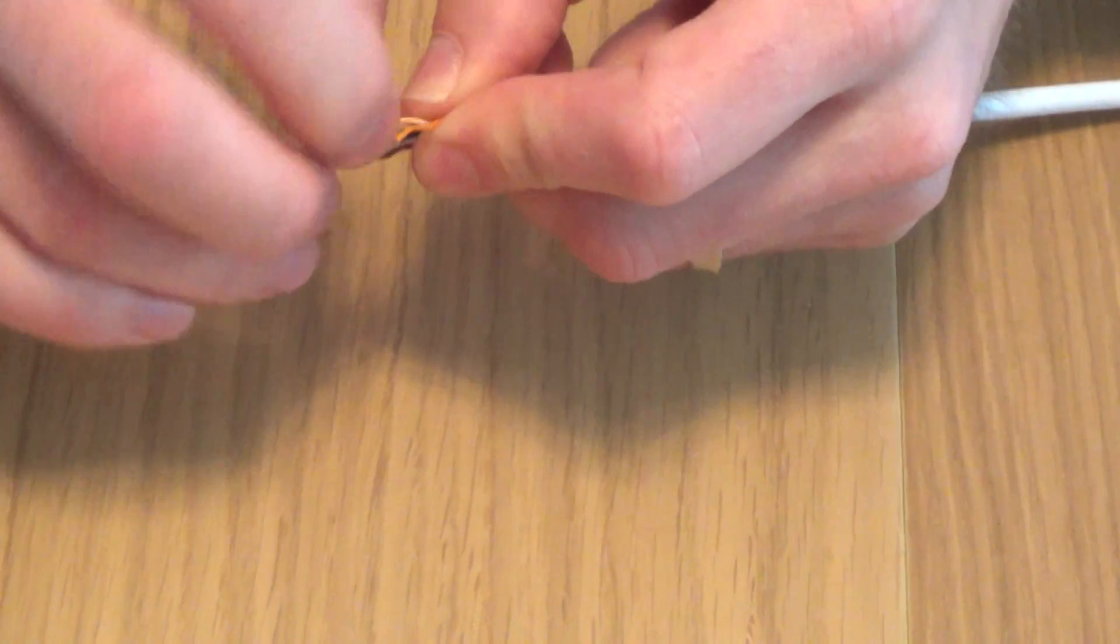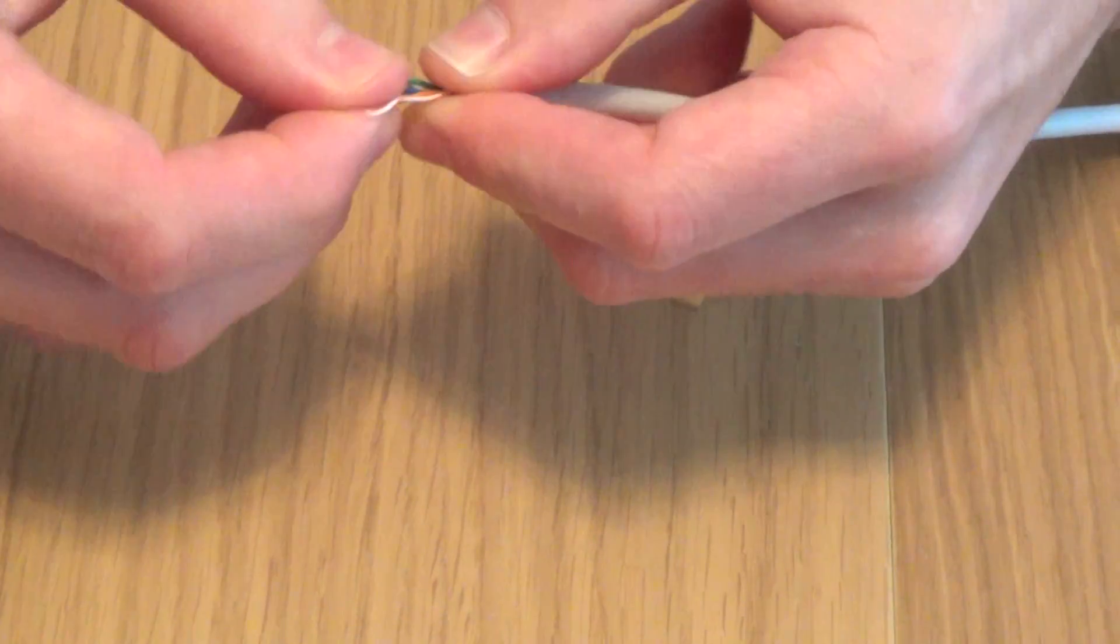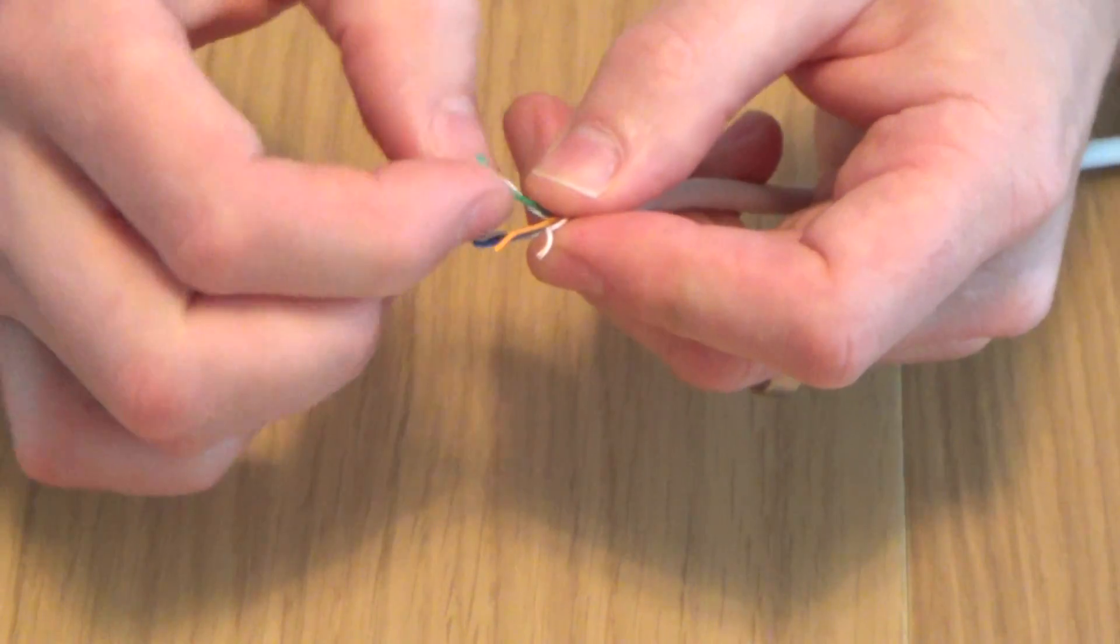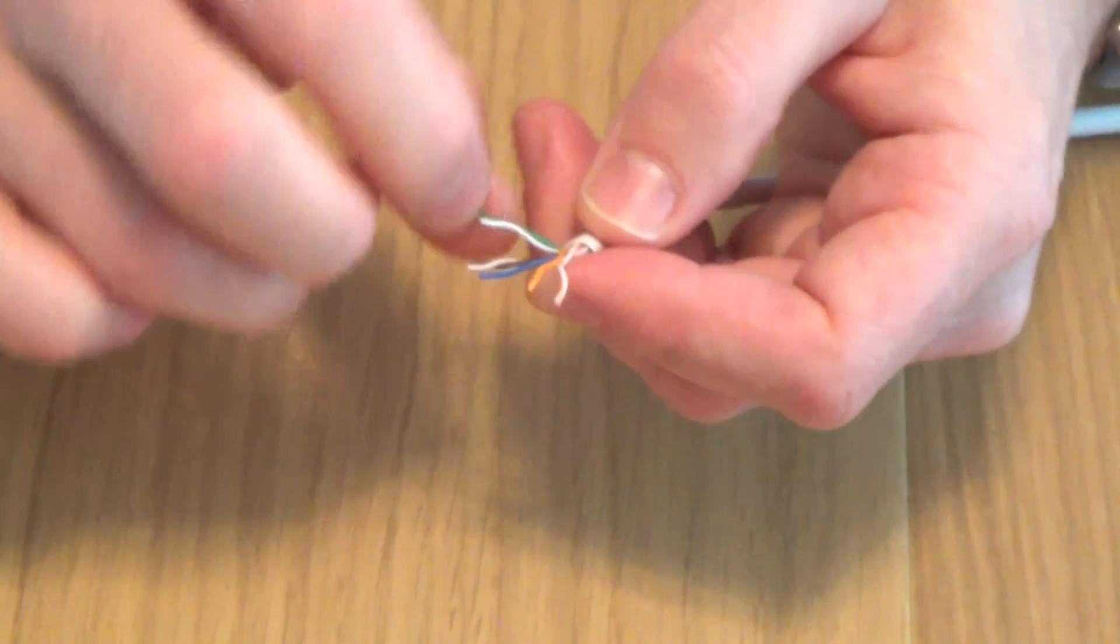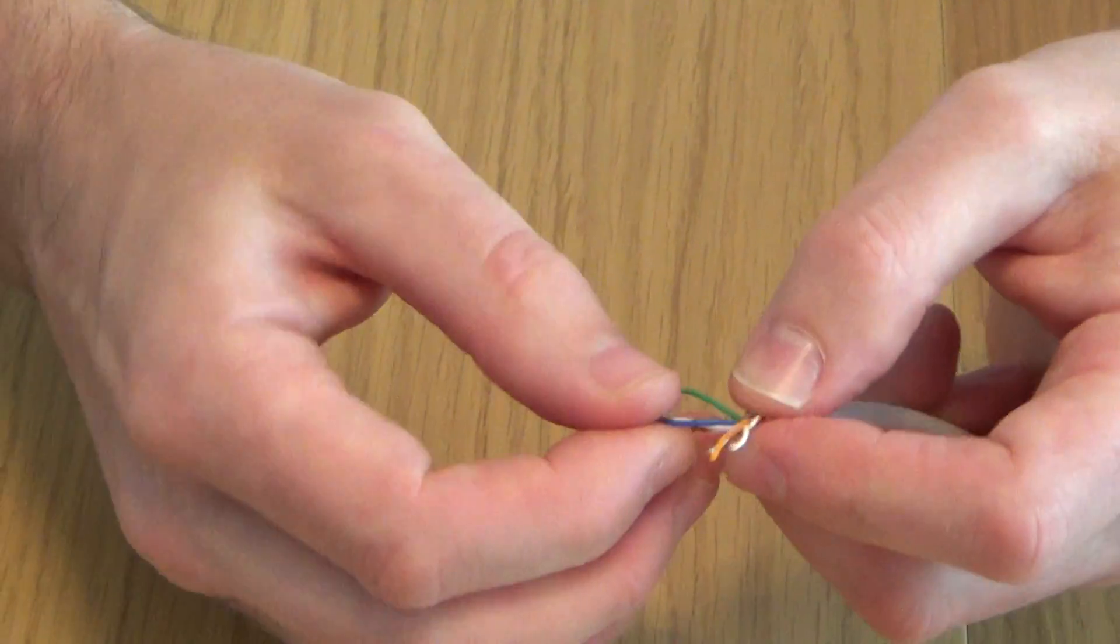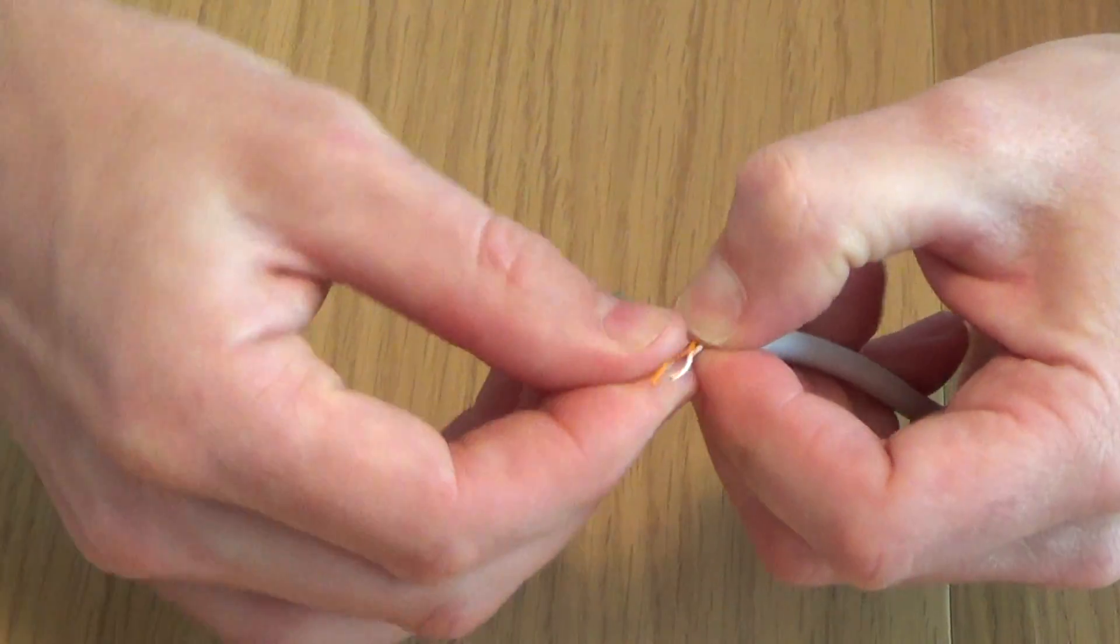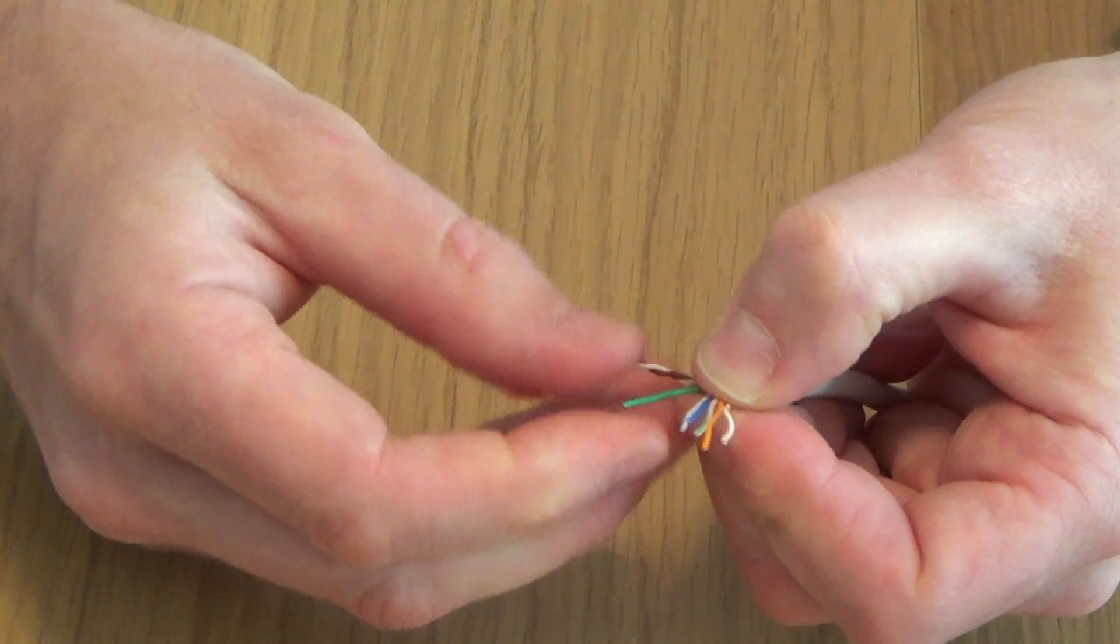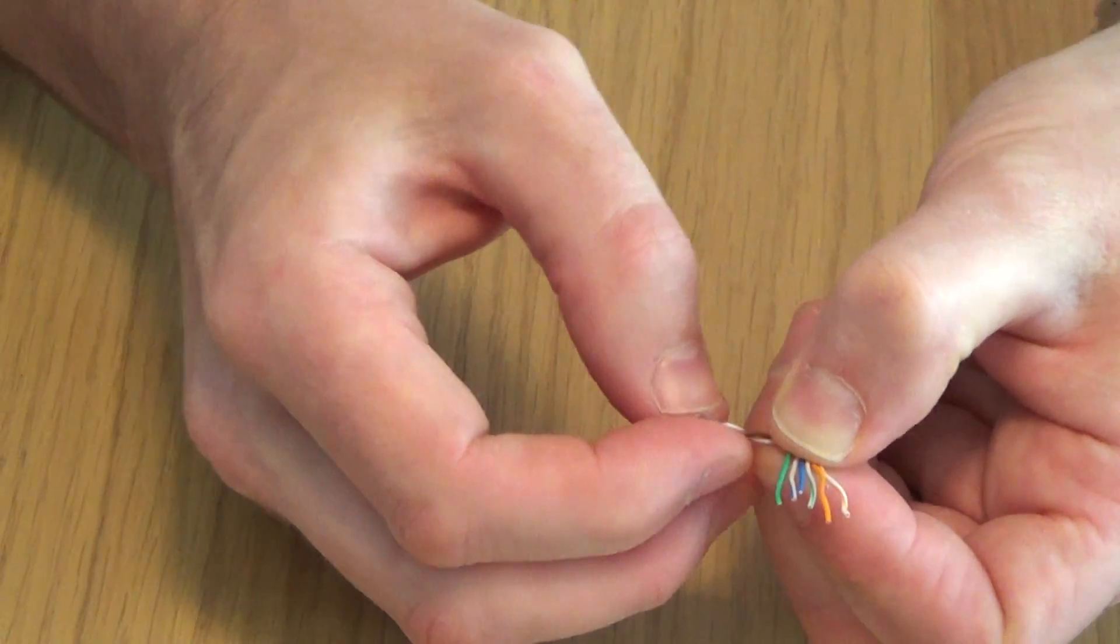So what you do is just untwist the wires there, now onto the greens, and we do the blues, I'll show you the colours in a minute, then the solid green.